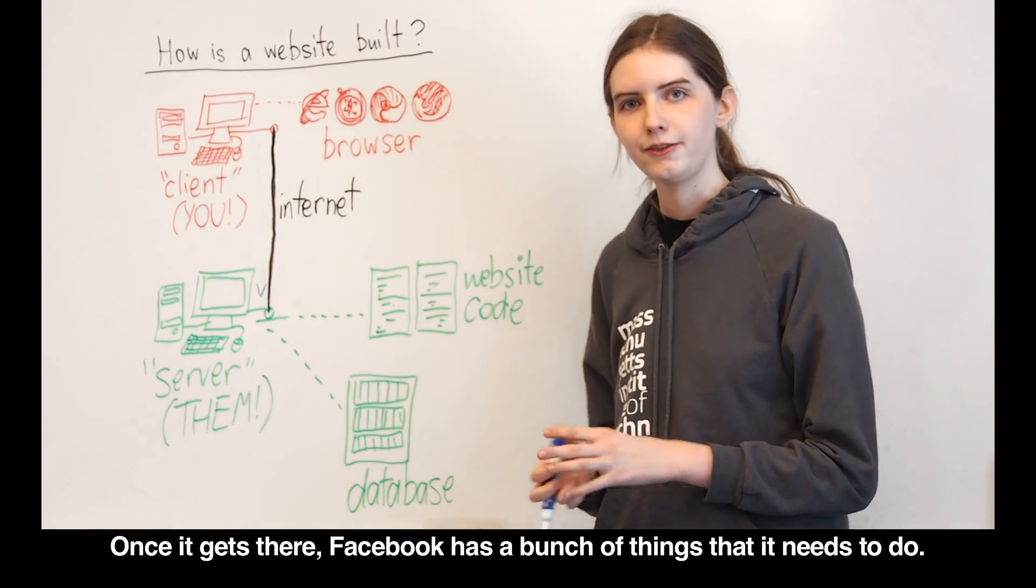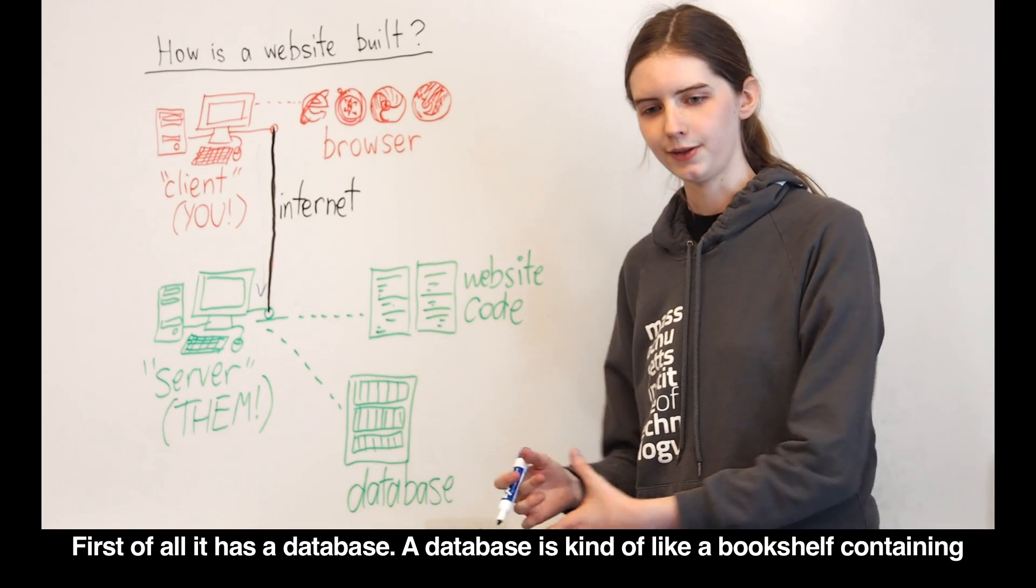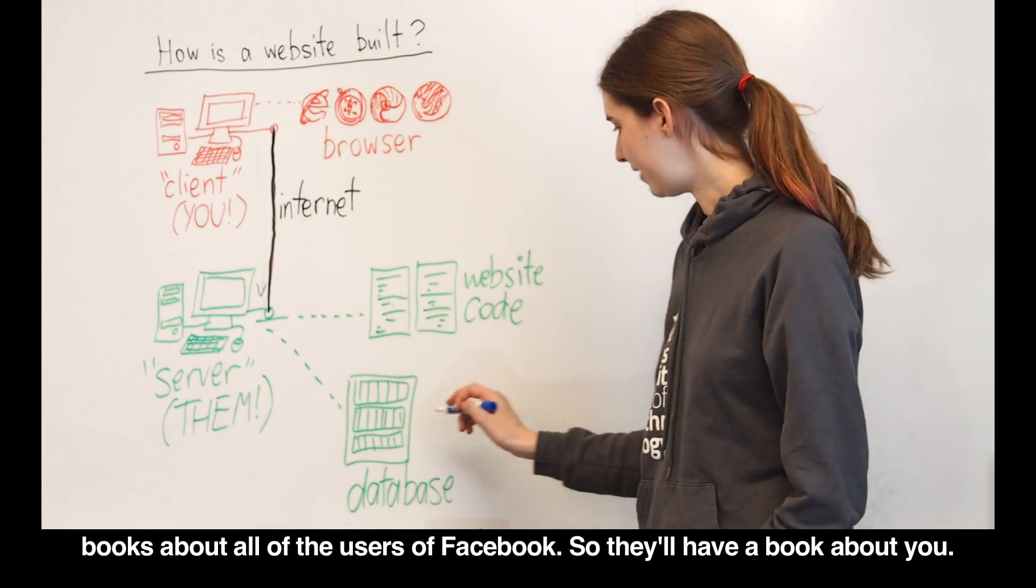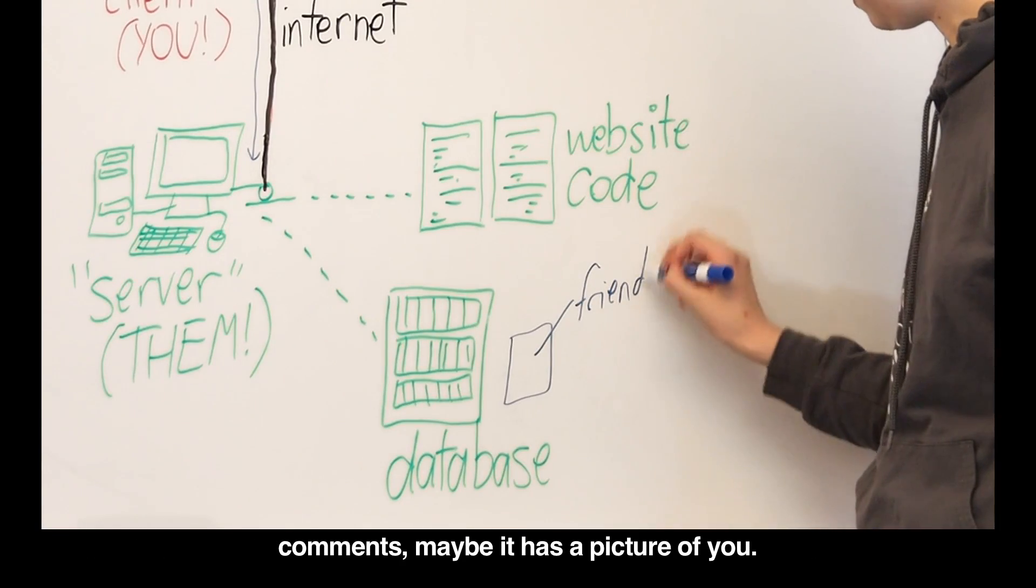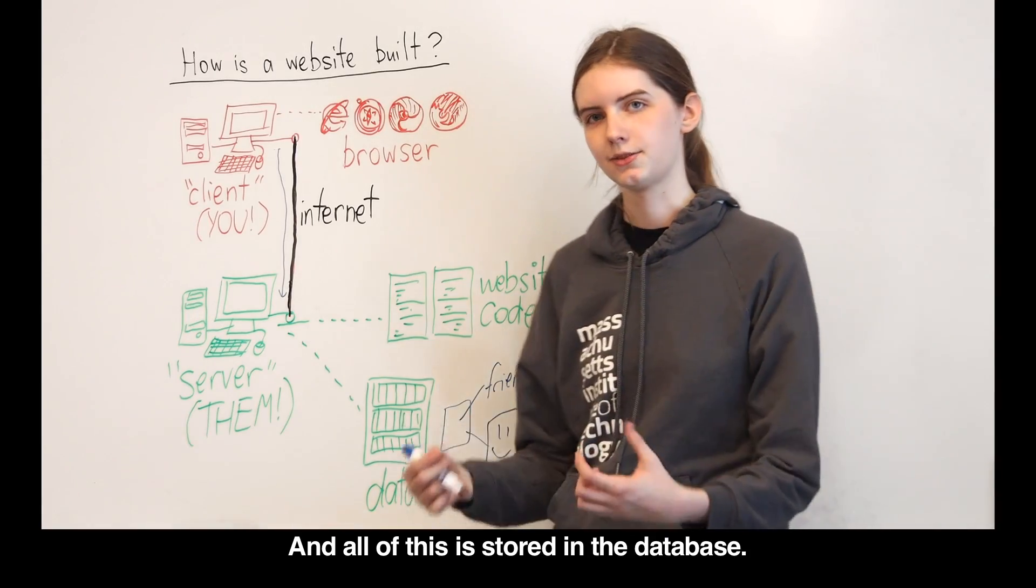Once it gets there, Facebook has a bunch of things that it needs to do. First of all, it has a database. A database is kind of like a bookshelf containing books about all of the users of Facebook. So they'll have a book about you with information about your friends and your posts, your likes and your comments, maybe a picture of you. All of this is stored in the database.